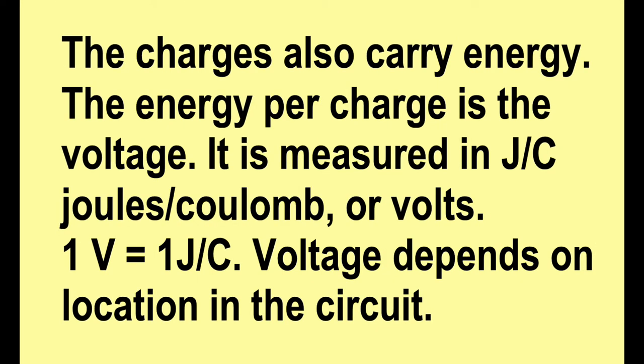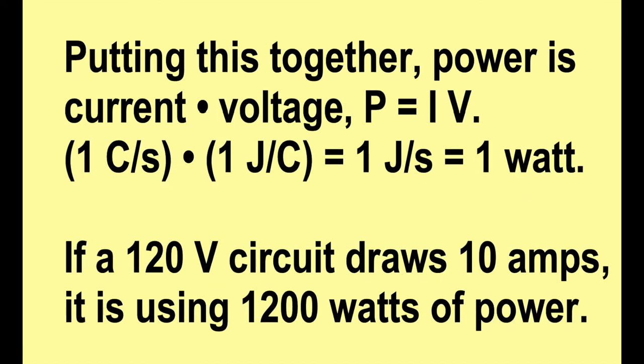The charges also carry energy. The energy per charge is the voltage. A volt is one joule per coulomb. Putting this together, power is current times voltage, or P equals I times V. One coulomb per second times one joule per coulomb is one joule per second, which is a watt — so that checks out.